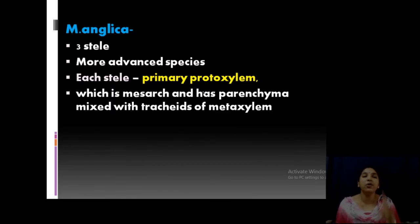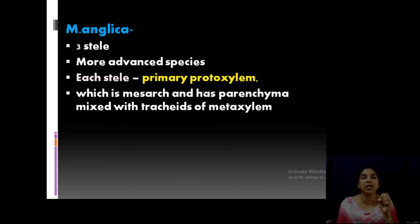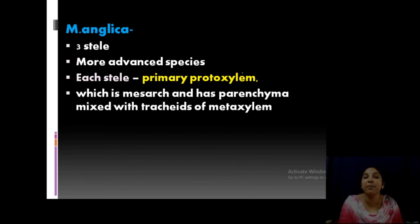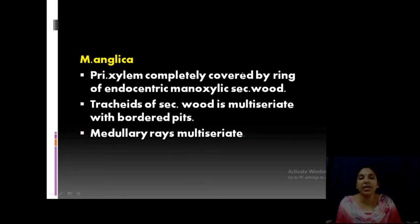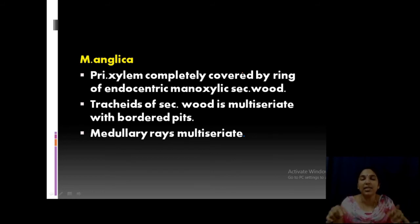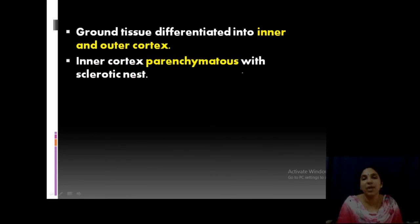Medullosa anglica has three steles and is in our set of fossil slides on campus, so it will appear in the examination. It is a more advanced species. Each stele has a primary protoxylem and parenchyma mixed with tracheids and metaxylem. Primary xylem is completely covered by manoxylic secondary wood. That secondary wood is multiseriate with bordered pits. Medullary rays are also multiseriate.